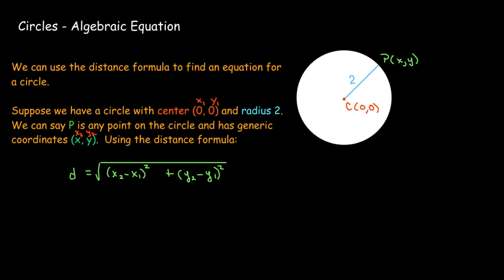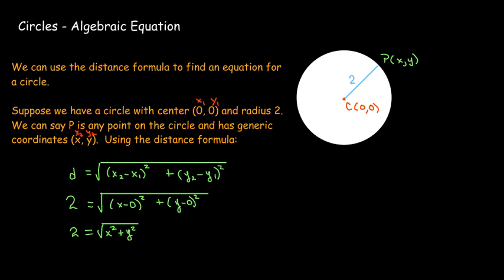My first point is going to be the center, (0, 0), and the second point is the generic point (x, y). This gives a formula with both x and y. Direct substitution into the distance formula gives the most complex expression first. To clean that up, x minus 0 is just x, squared gives x squared. The same for y gives y squared. So 2 equals the square root of x squared plus y squared — a much cleaner equation.